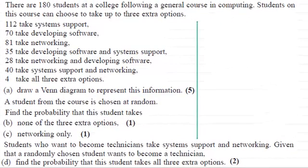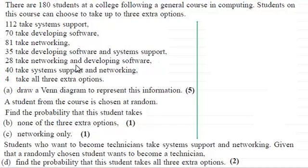For this question we're told that there are 180 students at a college following a general course in computing. Students on this course can choose to take up to three extra options: 112 take system support, 70 take developing software, 81 take networking, 35 take developing software and systems support, 28 take networking and developing software, 40 take system support and networking, and 4 take all three extra options. The first part asks us to draw a Venn diagram to represent this information for five marks.